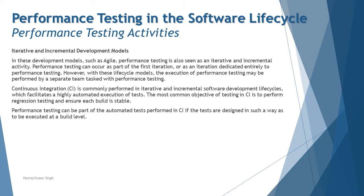Continuous integration is commonly performed in iterative and incremental software development lifecycles, facilitating highly automated test execution. The most common objective of testing in CI is to perform regression testing and ensure each build is stable. In iterative models, regression has a lot of scope — you are more worried about making sure the existing functionality is still working fine, and new test cases automatically become part of your regression test suite.